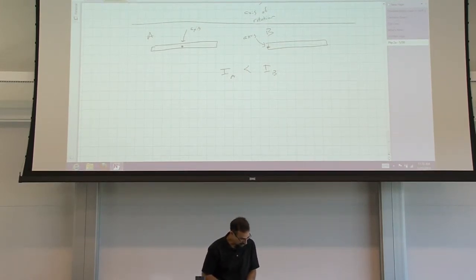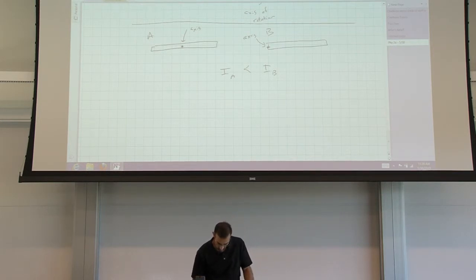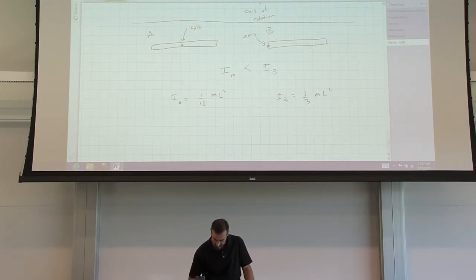So in your book here, they list both of them. This one is one-twelfth the mass of the rod times the length squared, and this one is one-third the mass of the rod times the square of the length. So they're both listed in the book, but those are the only two that are listed in the book.